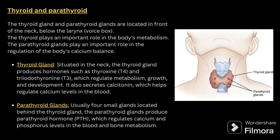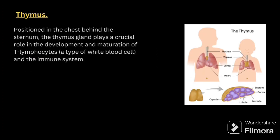Next comes the thyroid and parathyroid glands. The thyroid gland and parathyroid gland are located in front of the neck below the larynx, the voice box. The thyroid plays an important role in body metabolism. It produces hormones such as thyroxine T4 and triiodothyronine T3, which regulate metabolism, growth and development. It also secretes calcitonin, which helps regulate calcium levels in the blood. The parathyroid gland — usually four small glands located behind the thyroid — produces parathyroid hormone, which regulates calcium and phosphorus levels.